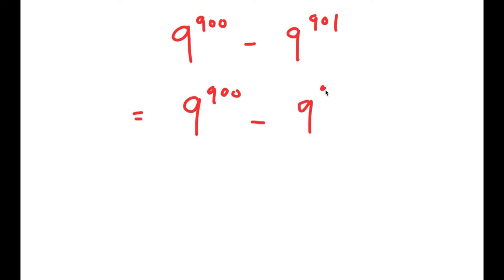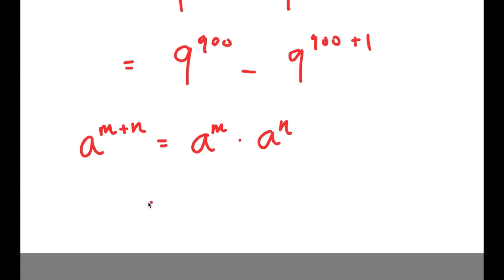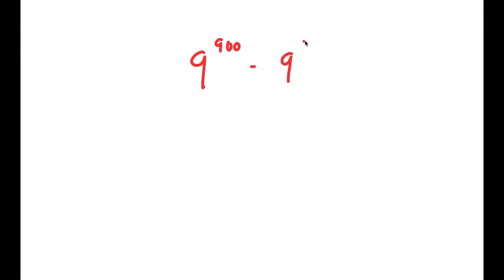I'm going to rewrite 9 to the power of 901 as 9 to the power of 900 plus 1. Now I can use the exponential property: a to the power of m plus n is equal to a to the power of m times a to the power of n. So I get 9 to the power of 900 minus 9 to the power of 900 times 9 to the power of 1.